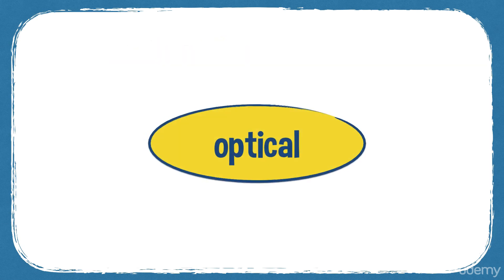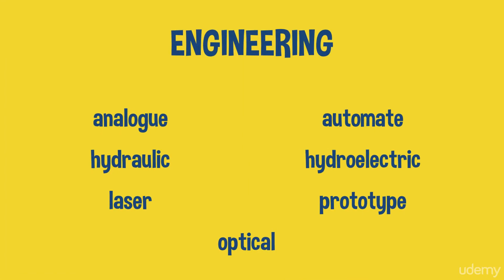Some synonyms for optical: 'visual' is the best one — there aren't really many more synonyms, as it's a very specialized word. So those are your seven engineering words: analog, automate, hydraulic, hydroelectric, laser, prototype, and optical.